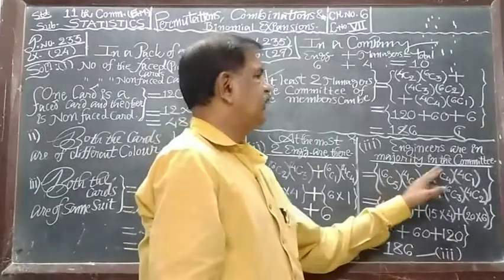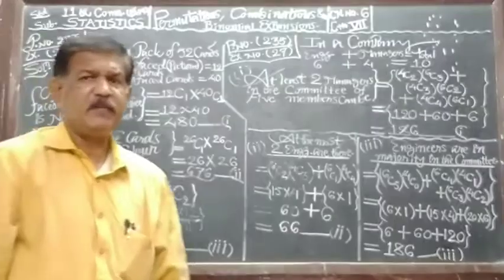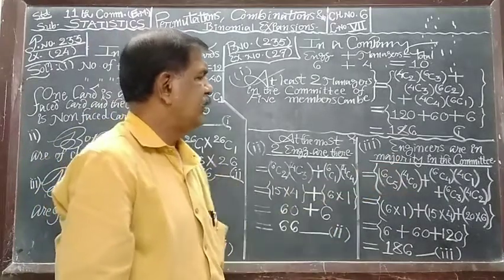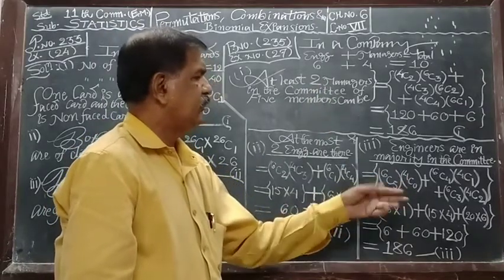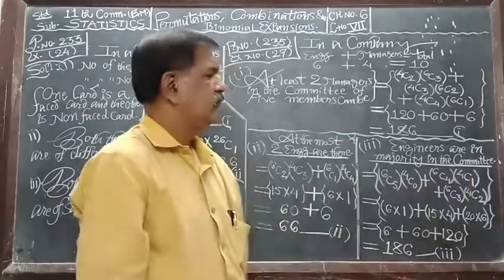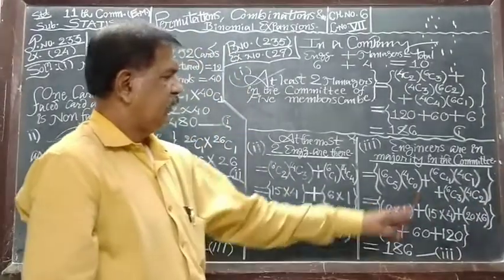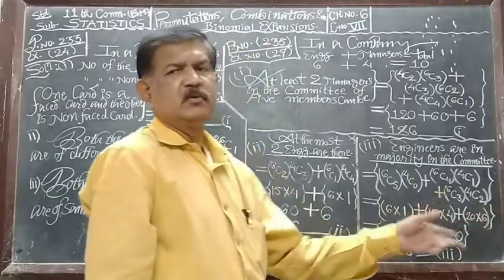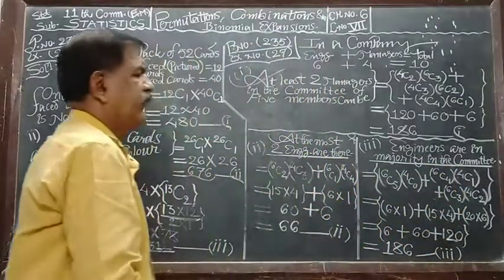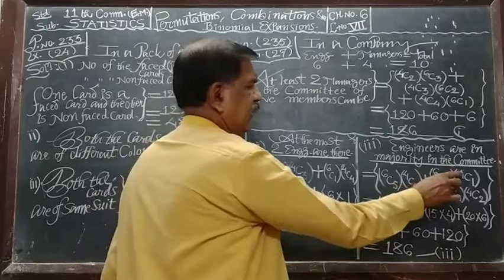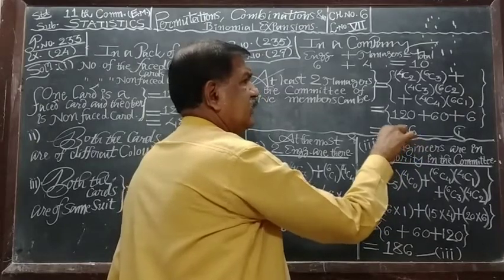Engineers are in the majority in the committee, means more than managers. There are more number of engineers than the managers in a committee of 5 members. Means engineers are in the majority. Means 6C5 and remaining manager means no manager; 6C4 and only 1 manager; 3 engineers, 6C3, remaining 2 managers. Next event, that condition will break, and that is why we take 3 cases: 5 engineers and no manager; 4 engineers and only 1 manager; 3 engineers and 2 managers. Then this condition is satisfied that engineers are in majority.